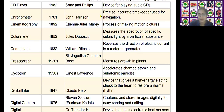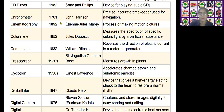The next scientific device is cinematography, invented by Etienne Jules Marey in the year 1892. It is used as a process of making motion pictures.